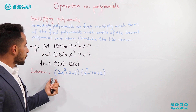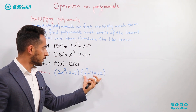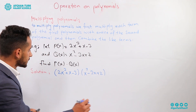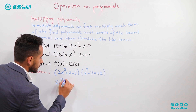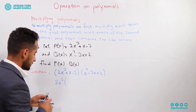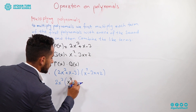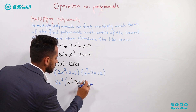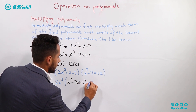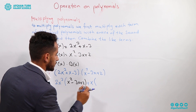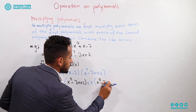First we have to write both polynomials on the same line. Then we have to multiply 2x³ with all of the second polynomial: x² minus 3x plus 2.